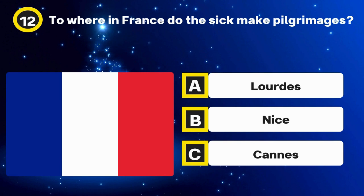Question 40. Alan Stewart-Konigsberg, famous as who? Options: Woody Allen, Martin Scorsese, Quentin Tarantino. The answer: Woody Allen.